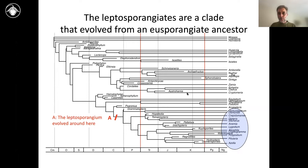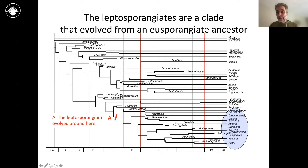There's a fair amount of variation. The leptosporangiate ferns, which I've circled here, are themselves a clade — a group with a single common ancestor. It is in that ancestral lineage that the leptosporangium evolved. Prior to that, everywhere else on this tree, the organisms had what's called a eusporangium. There's only one relatively small group with a leptosporangium; everything else has a eusporangium.